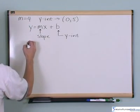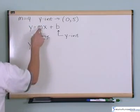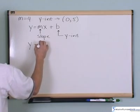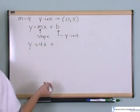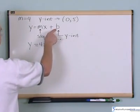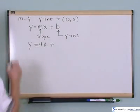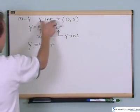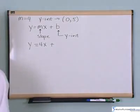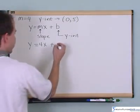All I need to do is I say, okay, y equals slope is four, four x plus, and all I need to do is figure out what is the y-intercept. And I've given it to you on the problem. The y-intercept is zero comma five. So the y-intercept is five.